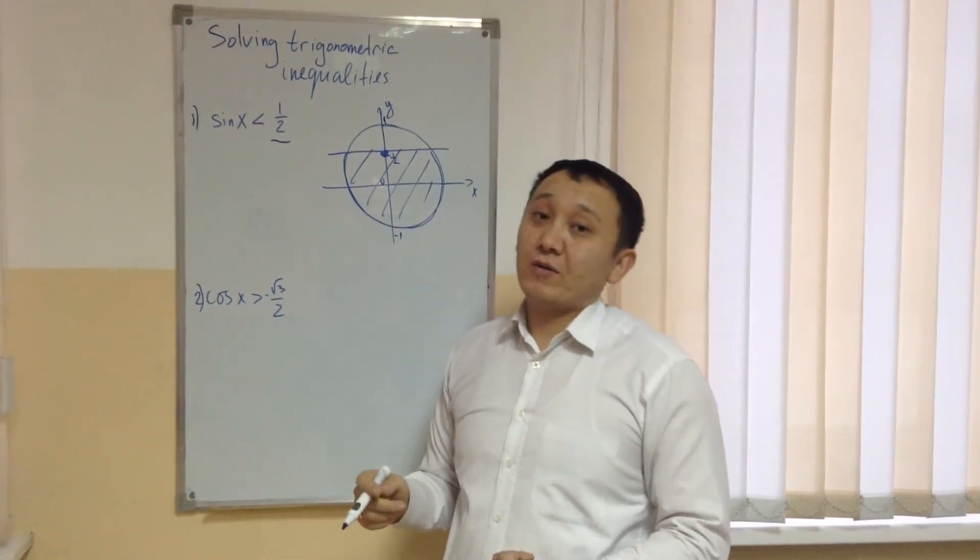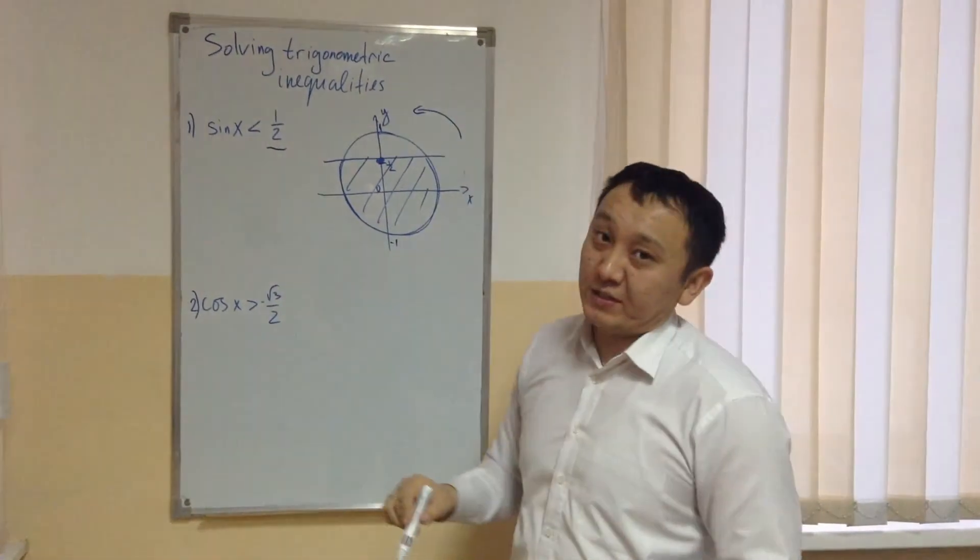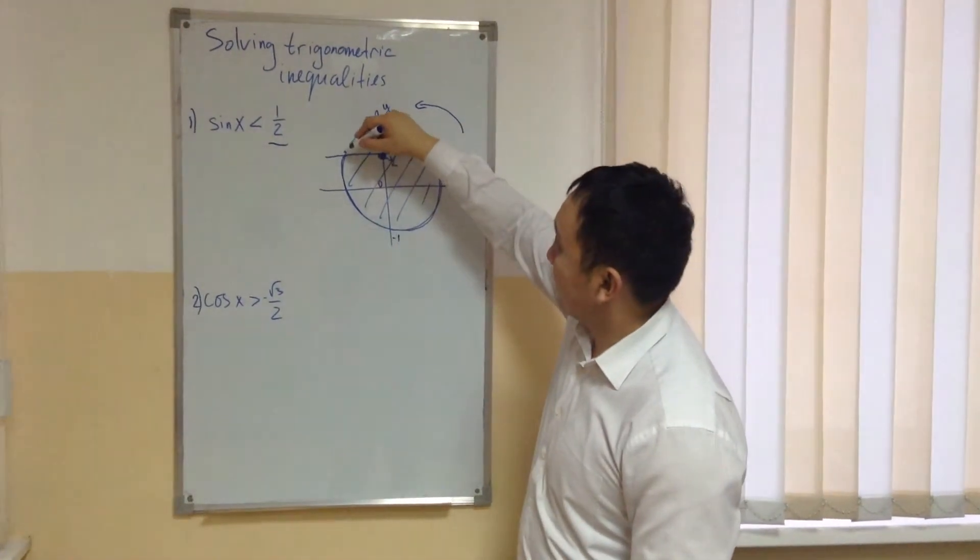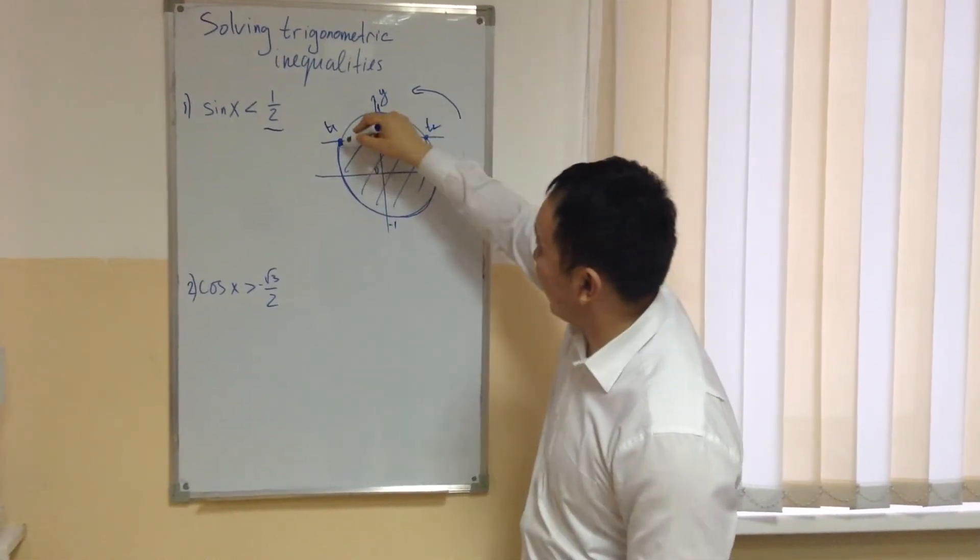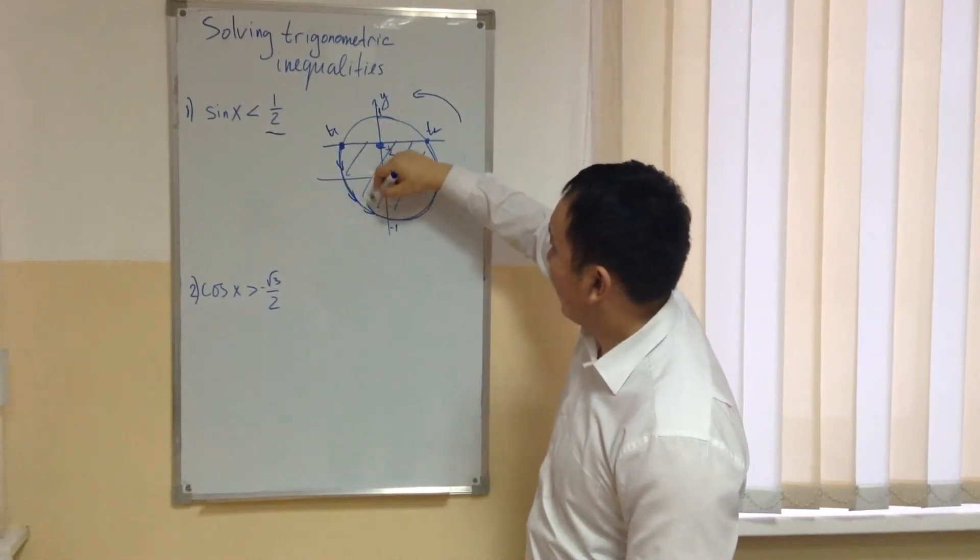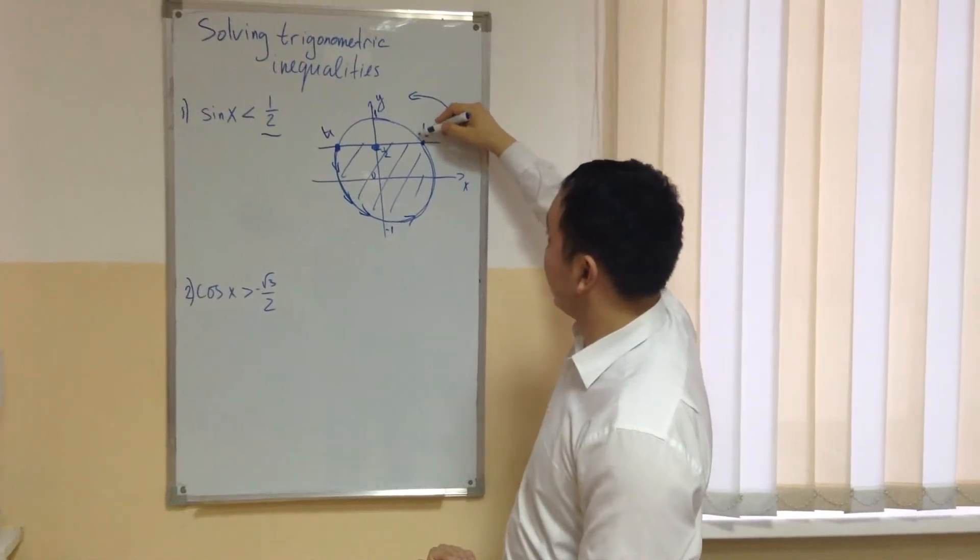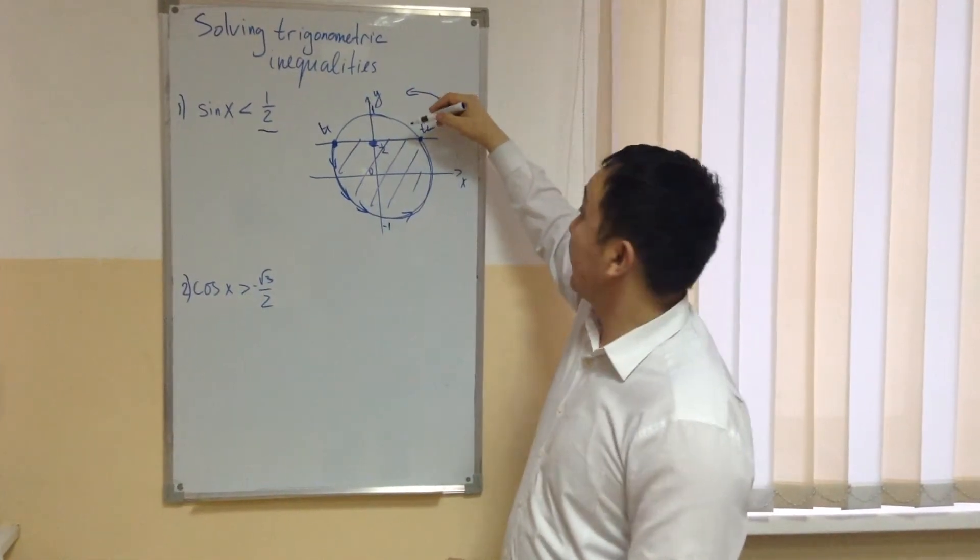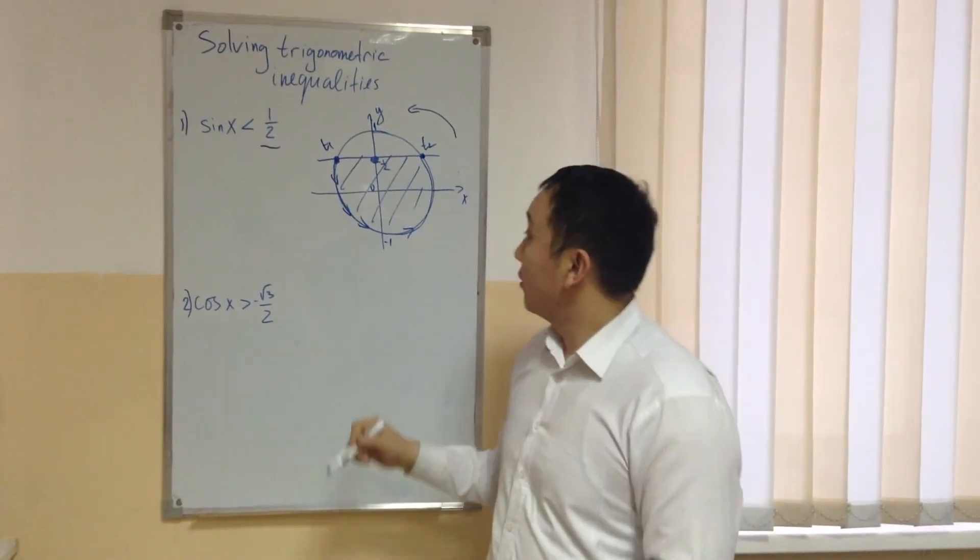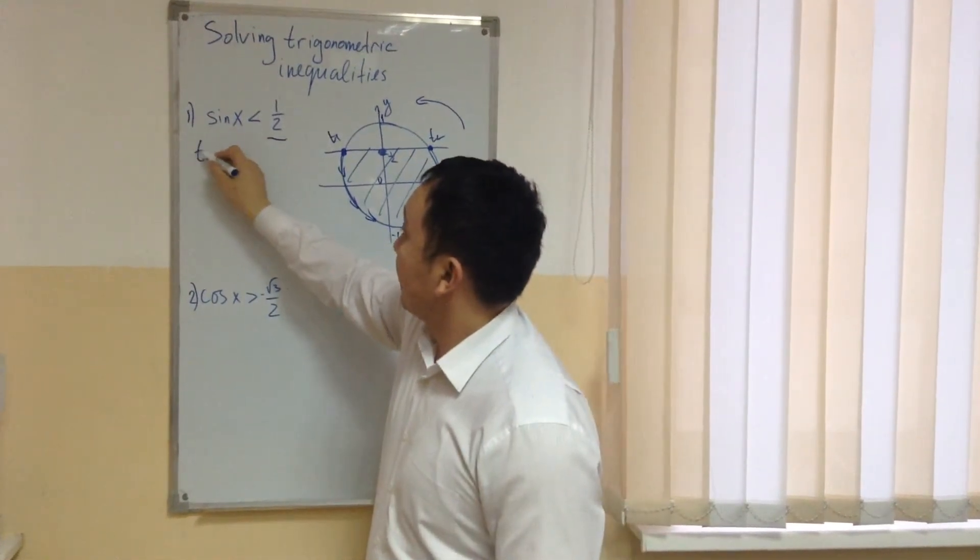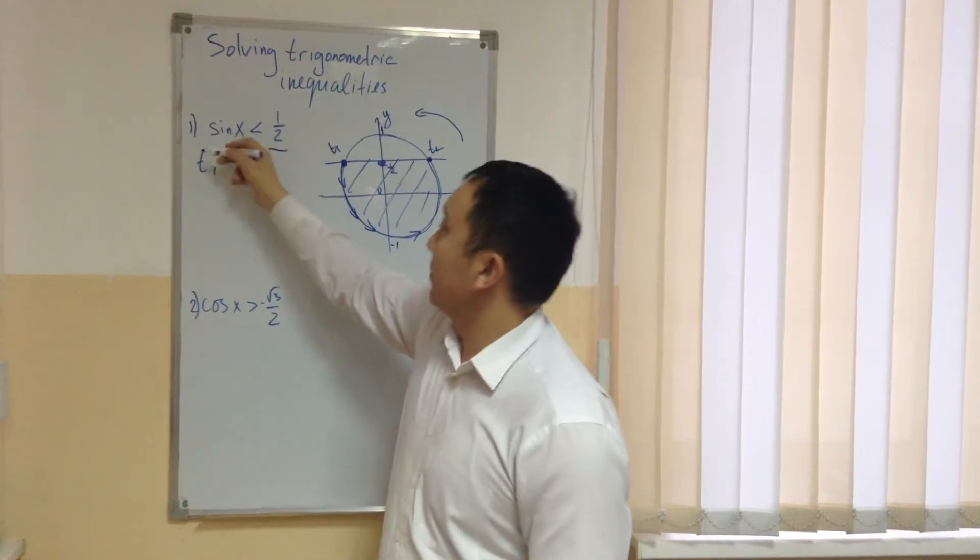When we are writing our solution, we always have to move counterclockwise in this direction. So my answer has to start from this, this is my first point, this has to be my second point. Because I can move only this way, I cannot move to the opposite. So that's why this is the first point, this is our second point. My answer is going to be starting from t1 and finishing in t2 in simple brackets.